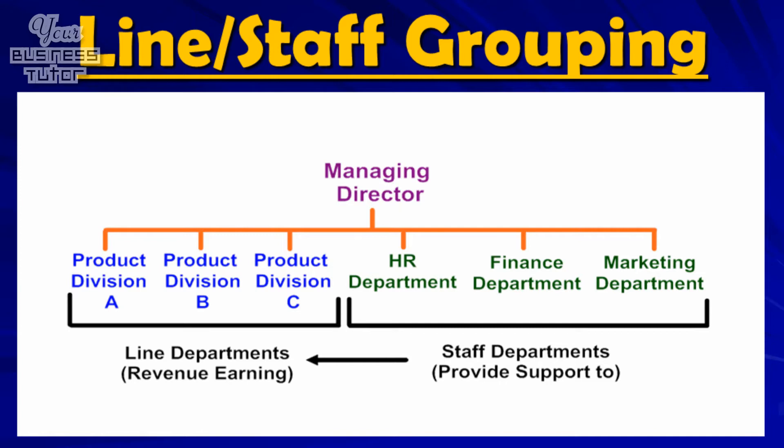And as the diagram shows, this particular organisation has three line departments: Product divisions A, B and C, and three staff departments: human resources, finance and marketing.